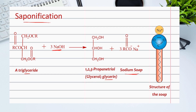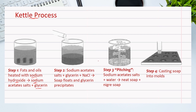To separate the glycerin from the soap — which is the sodium carboxylate salt — the mixture is heated with sodium chloride salt, where the soap floats as a thick layer to the top and the glycerin sinks to the bottom. The recovered glycerin is used in many industries, such as hand lotion, drugs, and nitroglycerin, which is a main component of explosives.